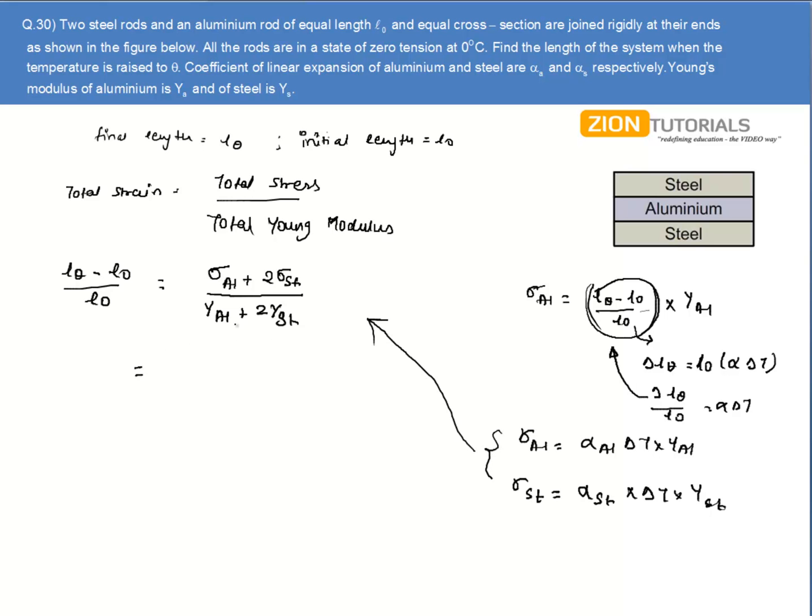So I substitute both of these. I have (L_theta - L0)/L0, and delta T is taken as common. So it comes out to be alpha of aluminum times Y of aluminum plus alpha of steel times Y of steel.